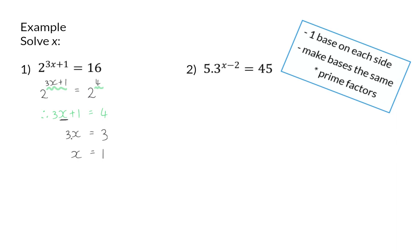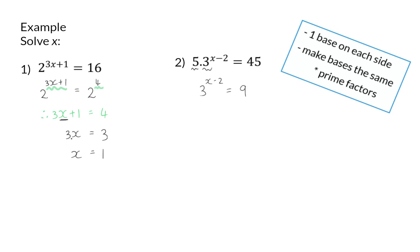In example 2, we don't have one base on each side. On the left we have 5 times 3. Here it is important to know that you cannot multiply the 5 and the 3 to get 15, because the exponents are different. This means I want to get rid of the multiplied by 5, and to do that I will divide both sides by 5. If I divide the right-hand side by 5, I will have 9. Now I do have one base on each side, and next I can make sure that the bases are the same. 3 on the left is a prime number, but 9 can be rewritten as 3 to the power of 2.